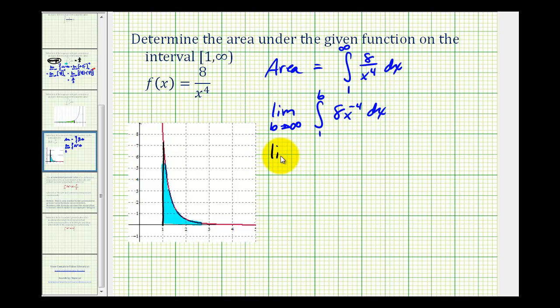So now we'll have the limit as b approaches infinity of eight times x to the negative four plus one, that's going to be negative three divided by negative three. The limits of integration are from one to b.